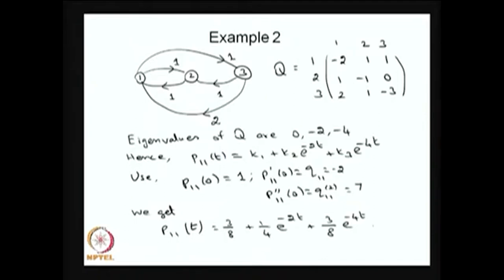Use the eigenvalue and eigenvector concept and get P₁₁(t) with the unknowns k1, k2, k3. To find the unknowns k1, k2, k3, use the initial condition.